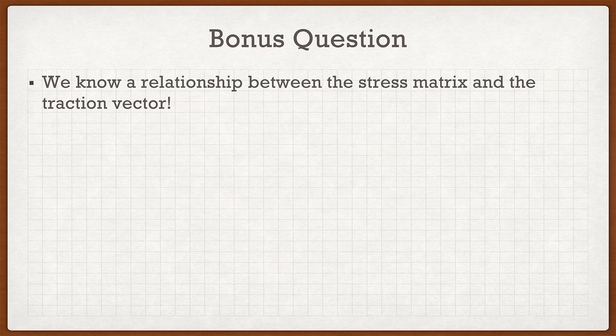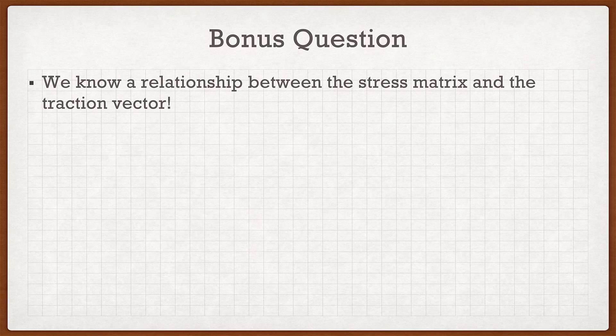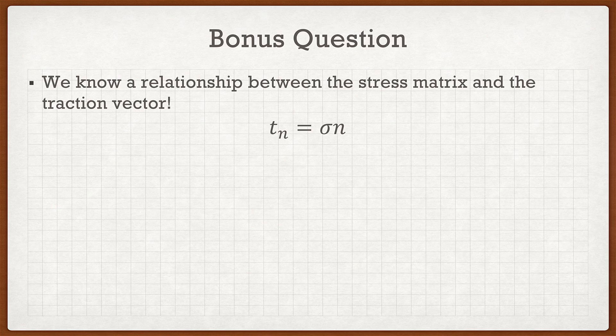How do we do that? We have to look for a relationship between the stress matrix, the normal vector, and the traction vector. That relationship that makes this question work is simply that the traction vector is equal to the Cauchy stress matrix multiplied by the normal vector.